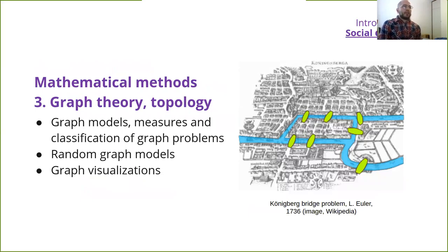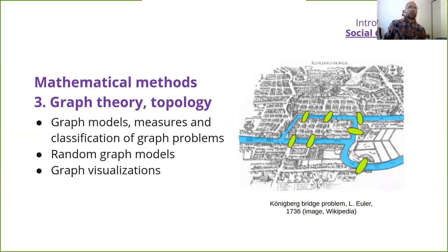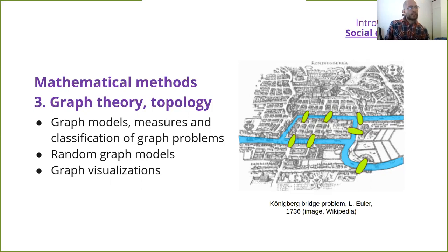Graph theory and topology started to develop all the way from 1736 when the Königsberg bridge problem was worked on by Euler. New graph models, measures, creation of graph problems, random graph models, and visualization techniques were developed and proved helpful. What we now have as network science combined at the end of the 1990s with physics and statistical physics.